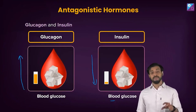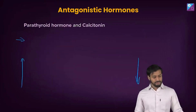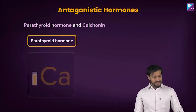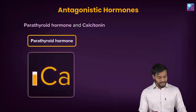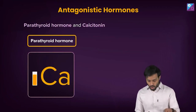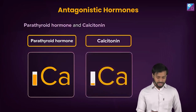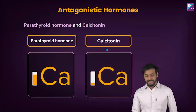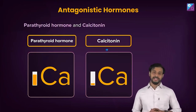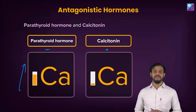Some more: parathyroid hormone and calcitonin. Parathyroid hormone increases calcium levels, whereas calcitonin reduces calcium levels. Calcitonin, the hormone of the thyroid gland, lowers blood calcium levels, whereas parathyroid hormone increases blood calcium levels.